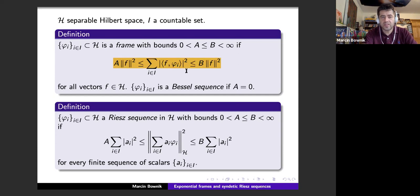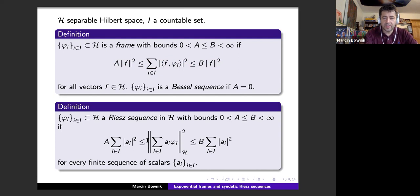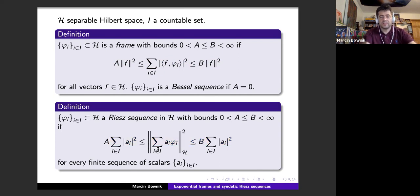A Bessel sequence is when you ignore the lower bound and have only the upper bound. A Riesz sequence is a dual notion: it's a collection of vectors so that when you take finite linear combinations and look at the norms of those combinations, this is comparable with the sum of squares of the coefficients. There are many equivalent definitions of Riesz sequences, some of which appeared in Andreas Hartmann's talk.